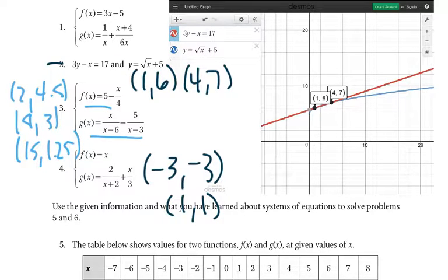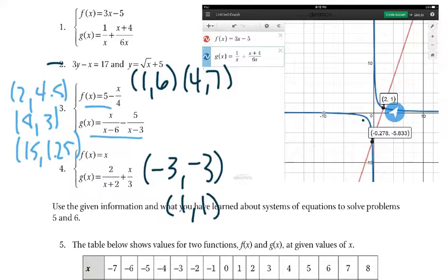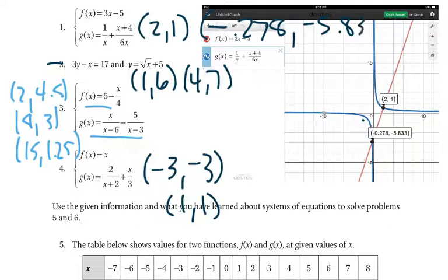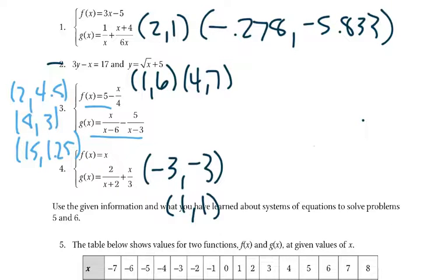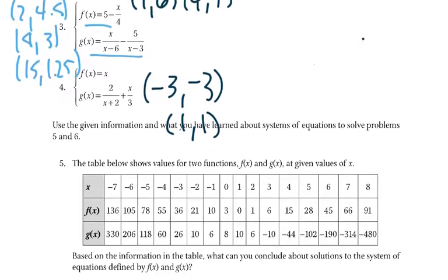And finally, we'll look at number 1. And here's number 1 with our linear and rational. So 2, 1 and negative 0.278, negative 5.833. So when you have the equations, just graph them, and there you go.